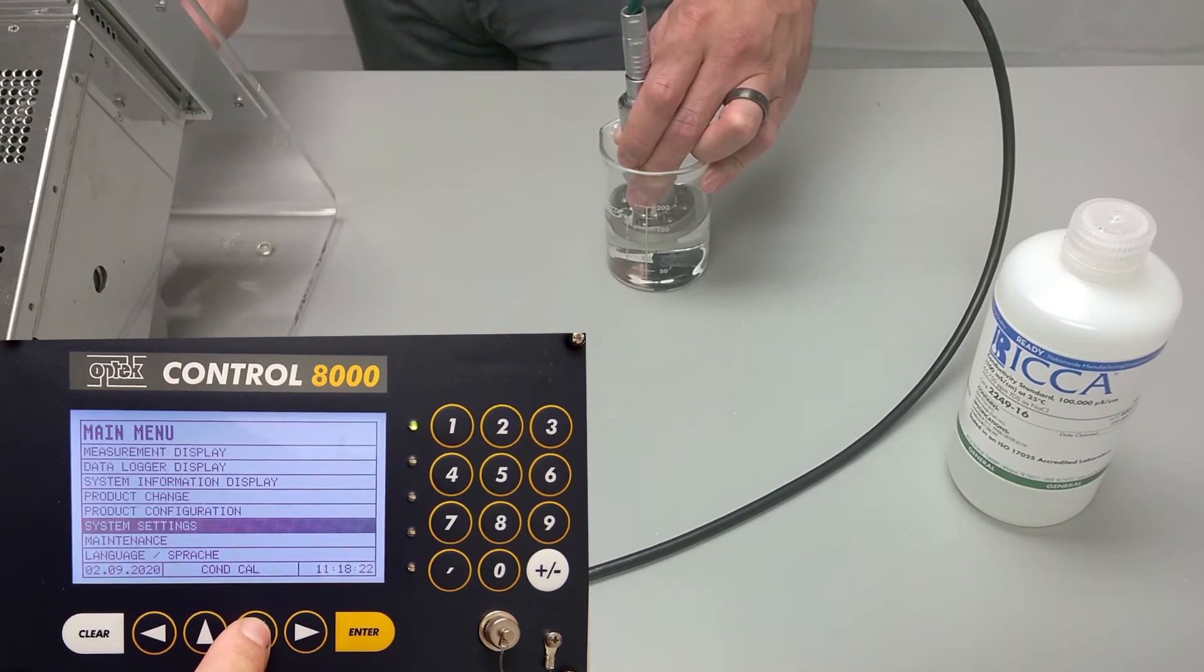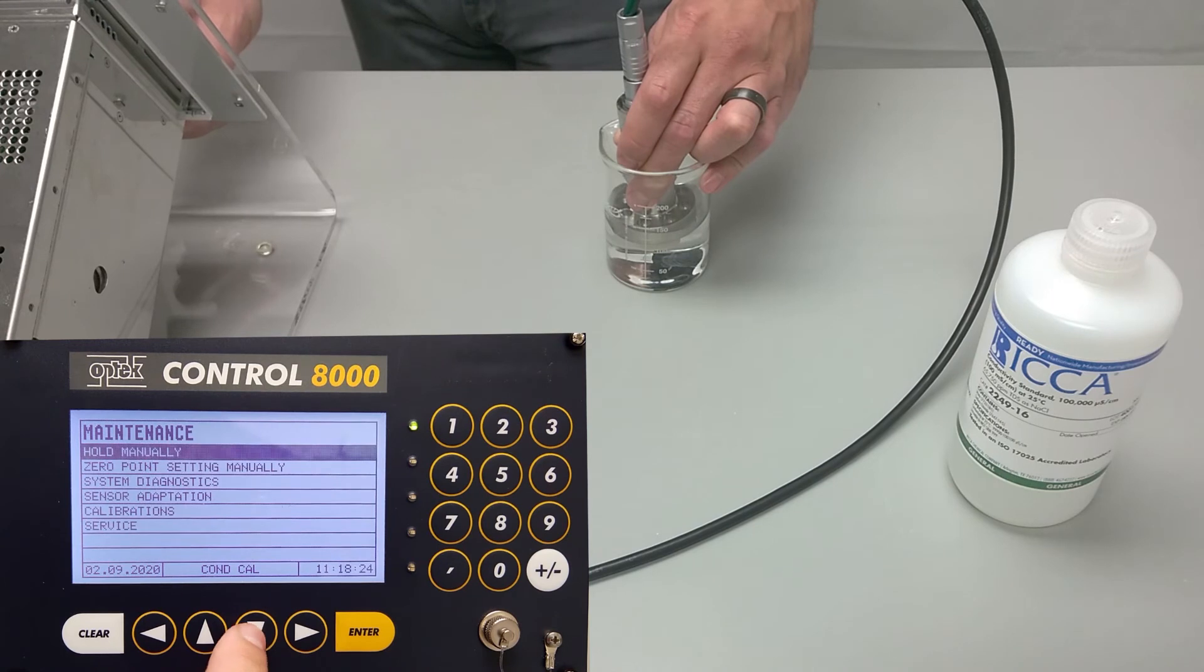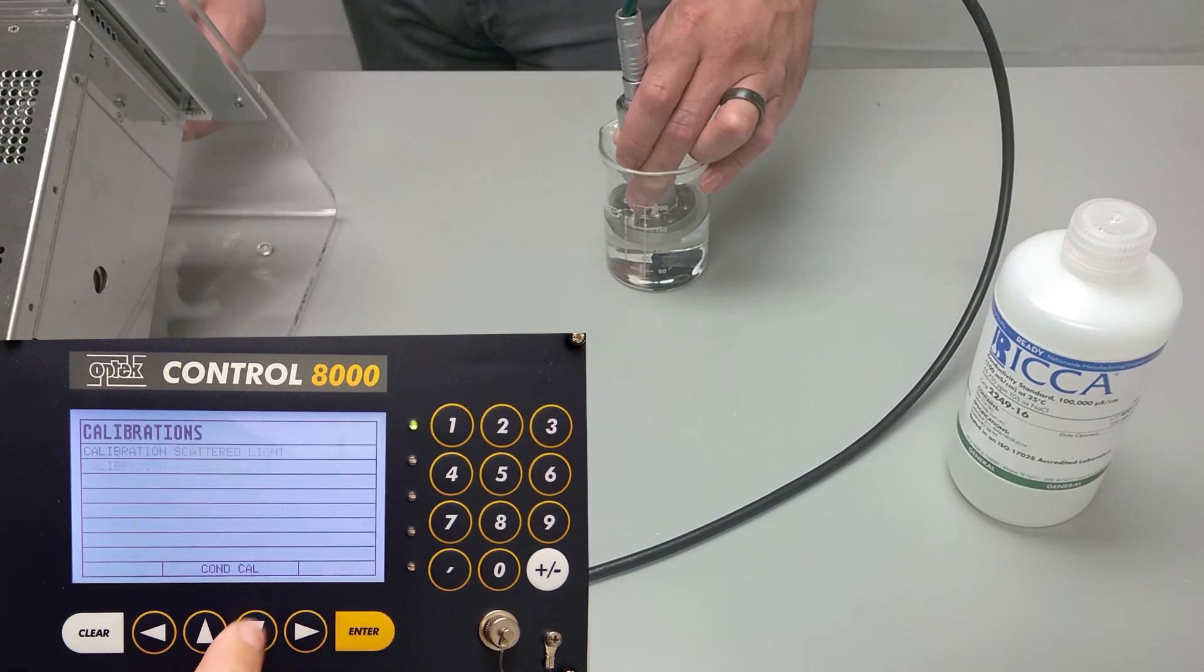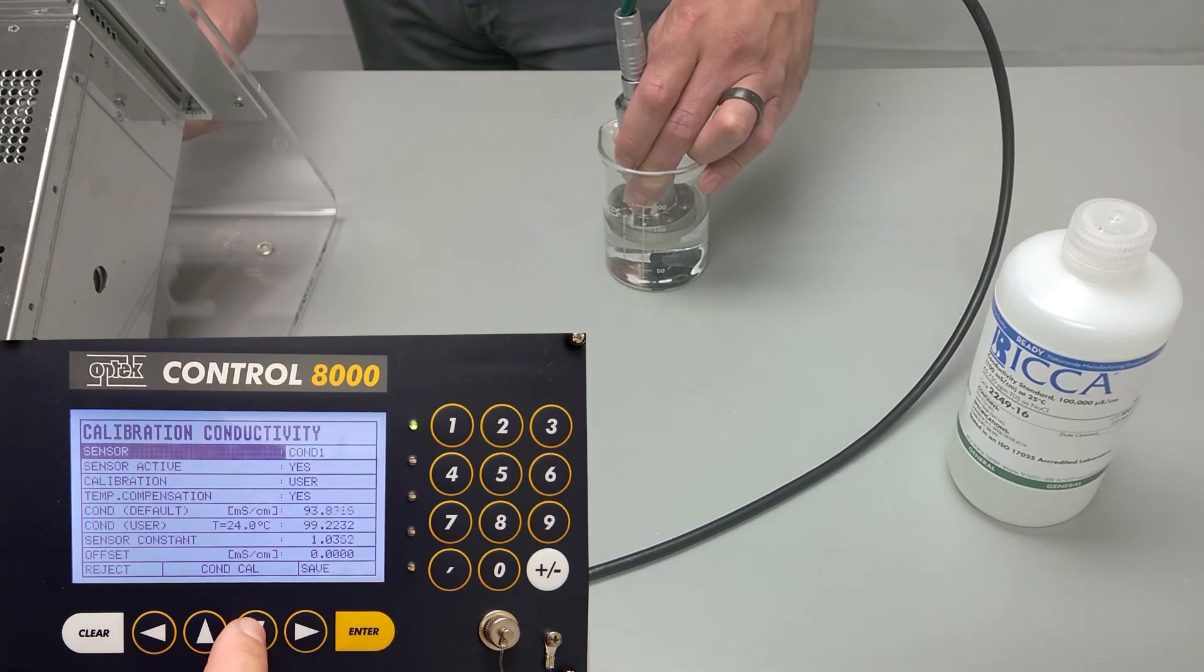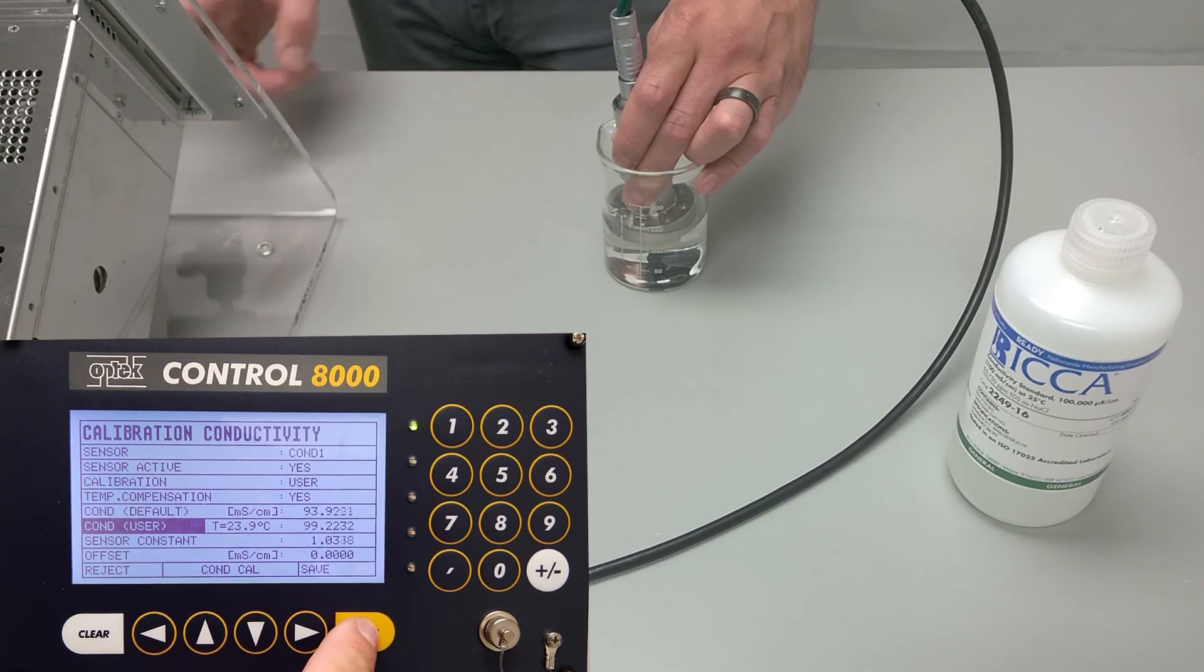We'll scroll down to maintenance, press enter, scroll down to calibrations, scroll down to calibration conductivity auto. COND1 is selected, so we'll scroll down to COND user and press enter.